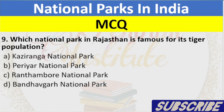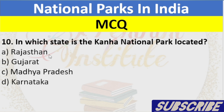Question 9: Which National Park in Rajasthan is famous for its tiger population? A. Kaziranga National Park, B. Periyar National Park, C. Ranthambore National Park, D. Bandhavgarh National Park. Answer: C. Ranthambore National Park.